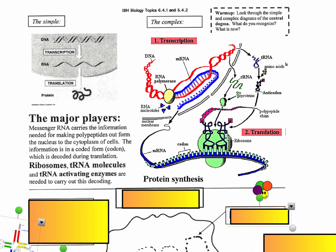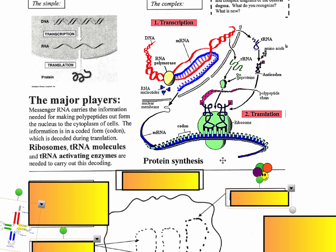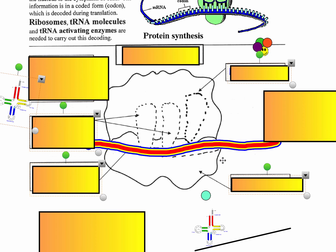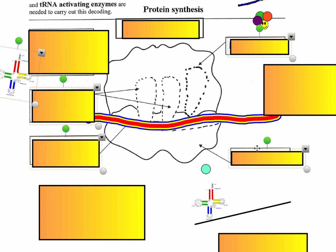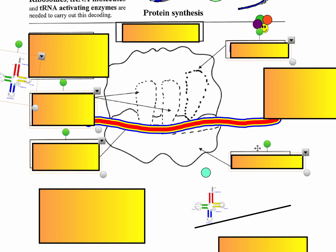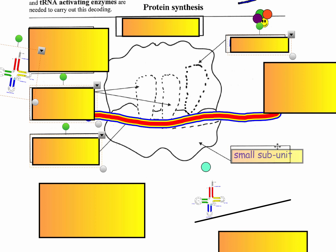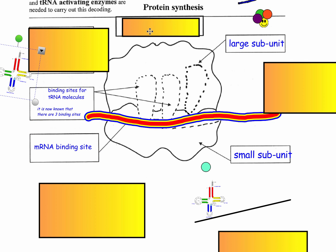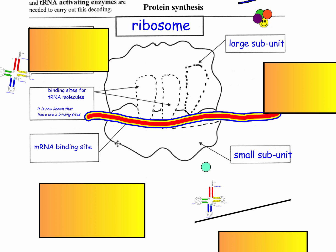We're going to look specifically at the structure of the ribosome — the different parts and how it all fits together — and then specifically about the tRNA molecules. This whole thing we're looking at is the ribosome, and it is made up of a small subunit and a large subunit — think of it as two halves.